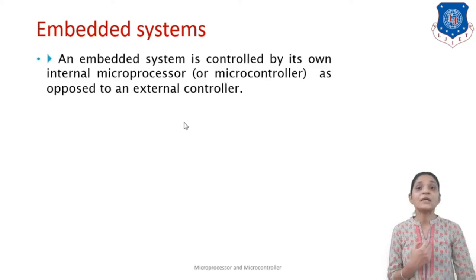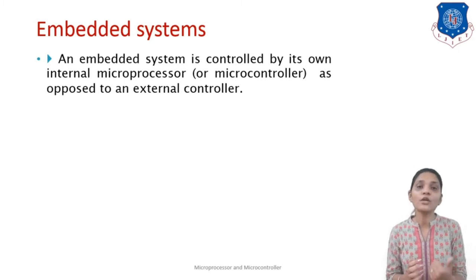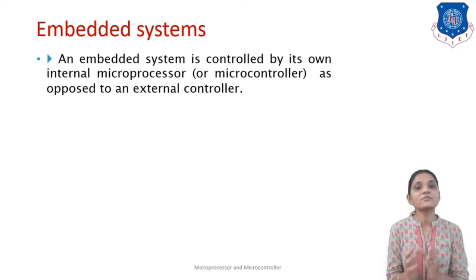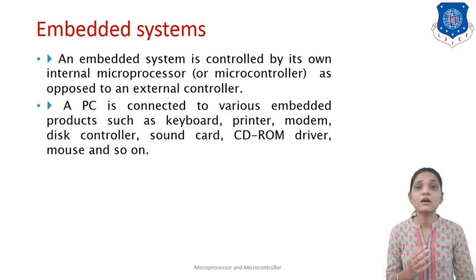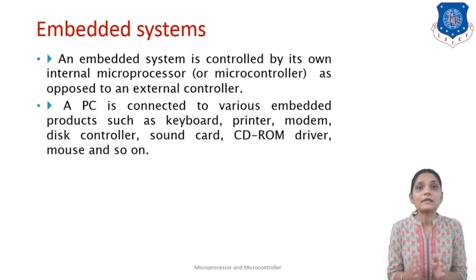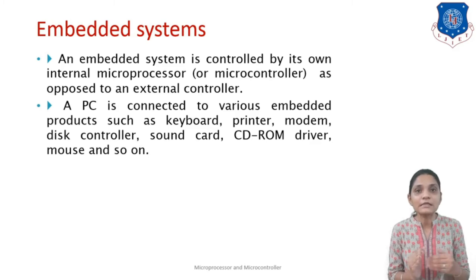An embedded system is a system that has control managed by its own internal microprocessor or microcontroller unit, as opposed to external control. Embedded systems do some work plus have some internal control. For example, devices connected to a PC like keyboards, printers, modems, sound cards, CD drives, and mice are all embedded systems — each has its own controller.